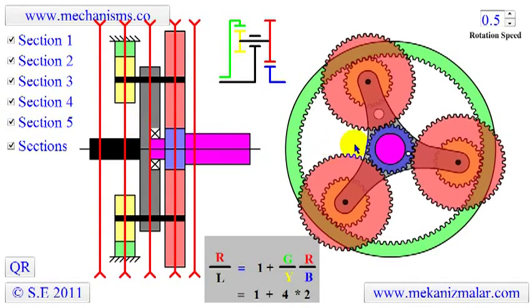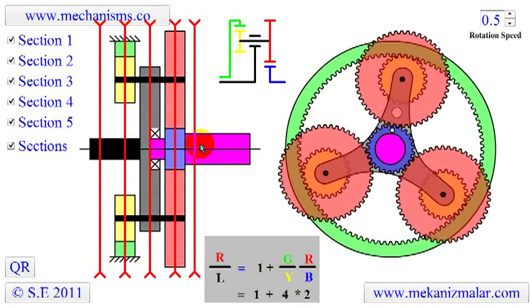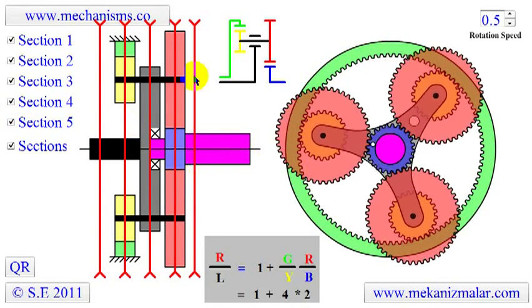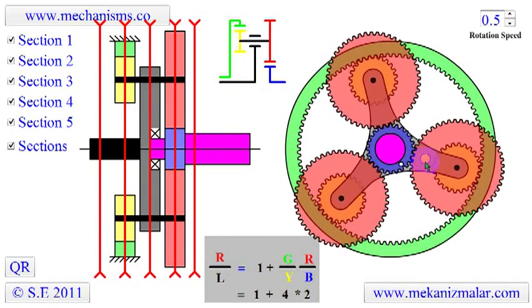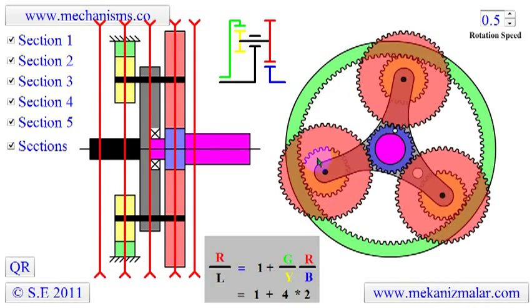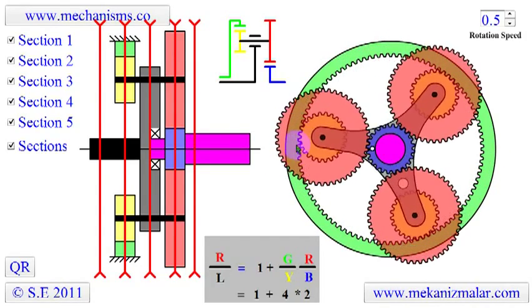The fifth and final stage shows the output shaft. The small white circle on the blue sun and the large white circle on the carrier will help us to find the rotation ratio of the output shaft to the input shaft.